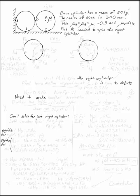Each cylinder has a mass of 50 kilograms. The radius of each is 300 millimeters, and I want to have three of the coefficients of static friction be 0.5 at A, B, and C, and the fourth one be 0.6 at D. What I want to know is how big an M do I need to spin the right cylinder?